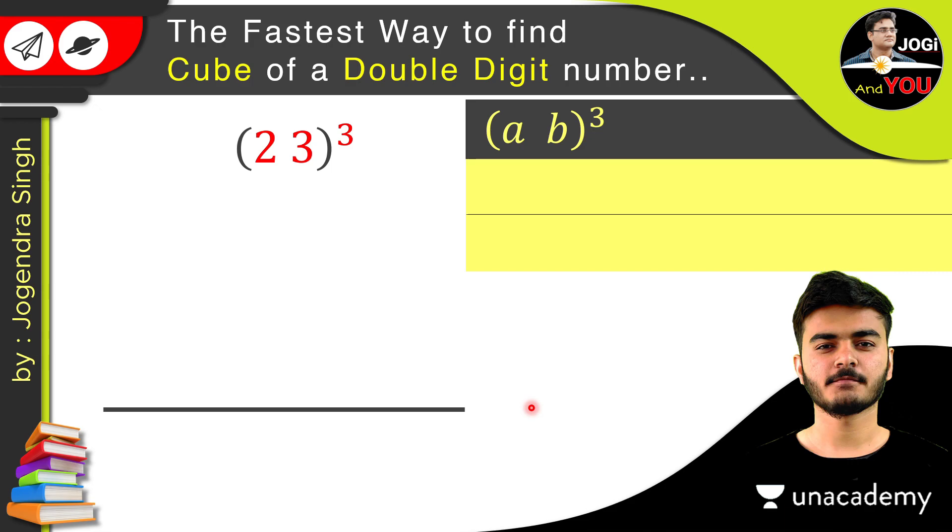So what is the first term of the expansion of the formula? a³, so replace a with 2. So 2³ is 8. So we will write 8 here on the first place. And after that, what is our second step? 3a²b. If we replace numbers with a and b, then we will get 3 × 2² × 3, and after calculating we will place it here which is 36.